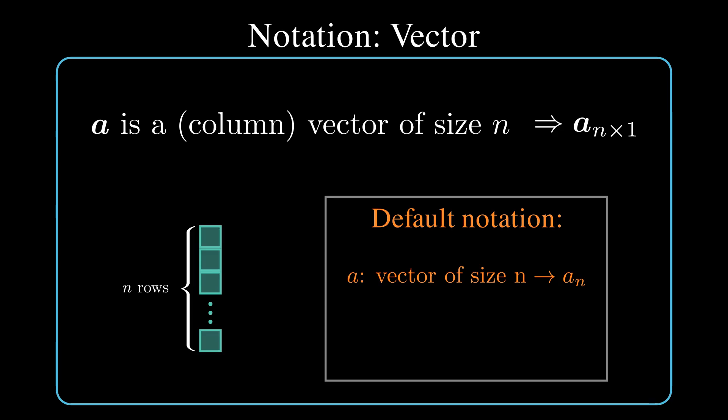It is easier to track the dimensionalities and check for the validity of a vector-matrix multiplication if we show both dimensions like n by 1 in the subscript. So in this video I represent a vector using the n by 1 subscript notation and encourage you to do that as well for learning and also for avoiding mistakes.